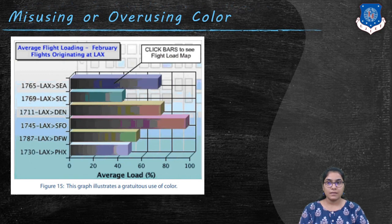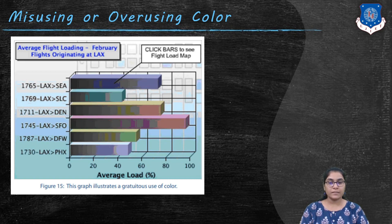Next is misusing or overusing colors. Color can be used in powerful ways to highlight the data and code the data, or create a relationship between individual items on a dashboard, but it is commonly overused and misused. Color choices must be made thoughtfully based on an understanding of how people perceive color and the significance of color differences.